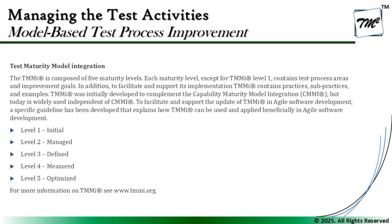Starting with the first model: TMMI, or Test Maturity Model Integration, is composed of five maturity levels — Initial, Managed, Defined, Measured, and Optimized. Each maturity level except level one contains test process areas and improvement goals. To facilitate and support its implementation, TMMI contains practices, sub-practices, and examples. TMMI was initially developed to complement CMMI — Capability Maturity Model Integration — but today is widely used independently, including a specific guideline for applying TMMI beneficially in agile software development.